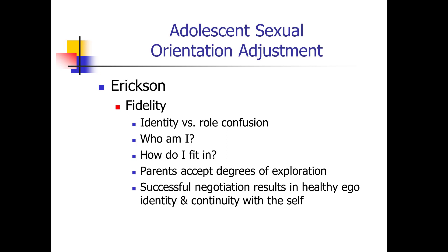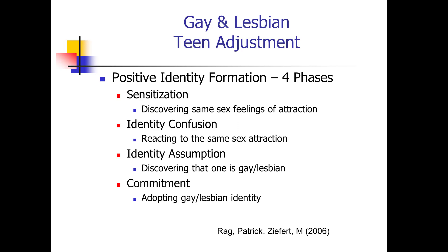In order to understand adolescent sexual orientation adjustment, we need to pay attention to Erikson's developmental stages. In the developmental component of fidelity, we look at identity versus role confusion in the adolescent — who am I, how do I fit in. Parents often will accept some degree of exploration, but the outcome of successful negotiation through this phase should result in a healthy ego identity and continuity with the self. That would be the goal of adolescent sexual orientation adjustment, be it gay, straight, bisexual, or other.